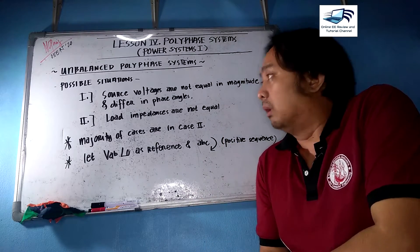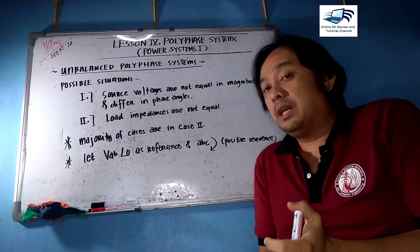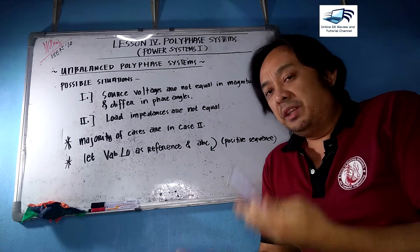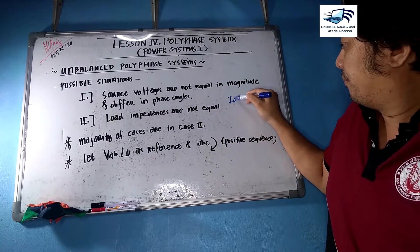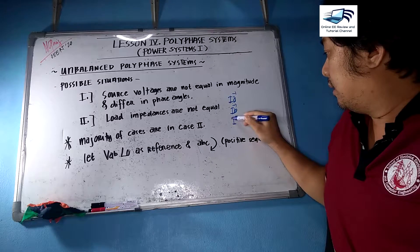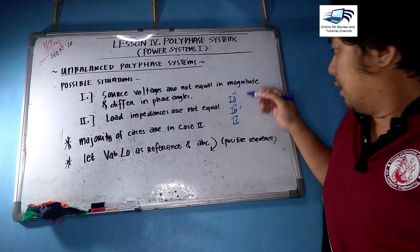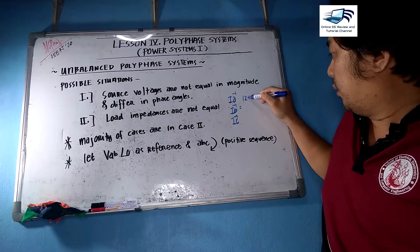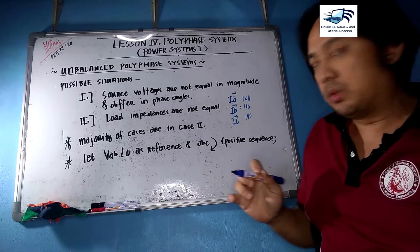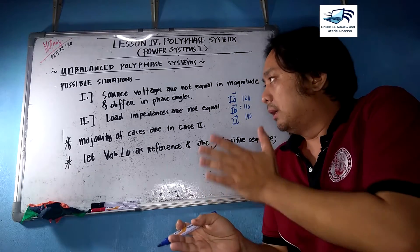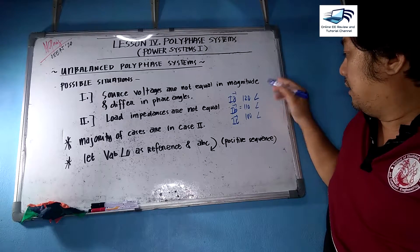The first situation is when the source voltages are not equal to each other. For example, if you have currents Ia, Ib, and Ic, for them to be balanced they must have the same magnitude. But if they have values like 120, 110, and 100, those values are not equal — that is Case Number One.